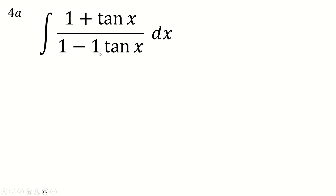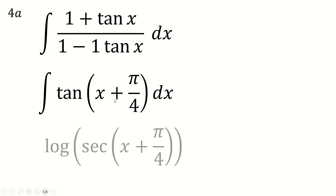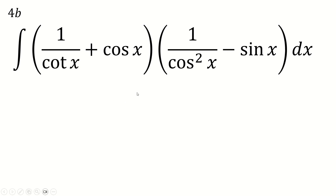This one is a really nice integral. The trick is hard to spot without a hint: both the 1s can be written as tan(π/4), so we can write the expression as tan(π/4) plus tan x over 1 minus tan(π/4)tan x, which is just the compound angle form for tan. So this equals tan(x + π/4), and since the integral of tan is log sec, and the argument differentiates to 1, the answer is log sec(x + π/4).